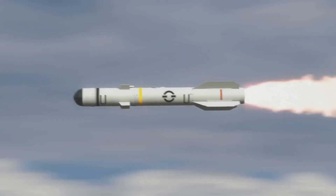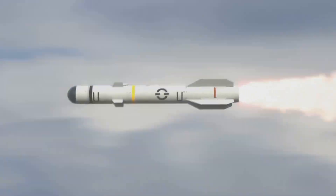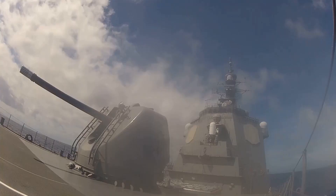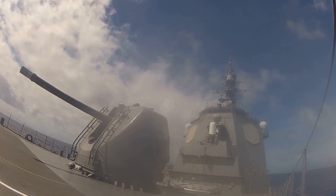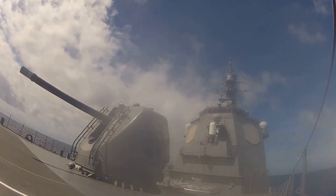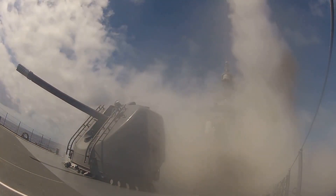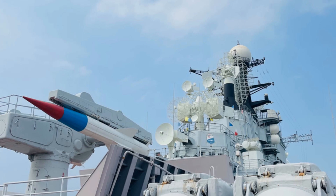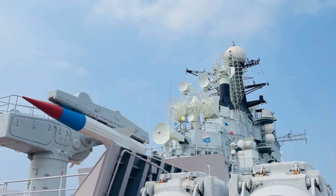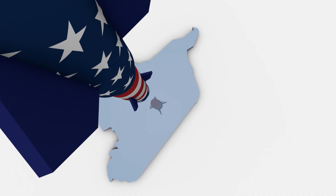Air-to-surface missiles (ASM) are fired from aircraft to hit ground or sea targets — examples are the AGM-65 Maverick and Storm Shadow. Sea-to-surface missiles are fired from naval ships or submarines to target surface vessels or land-based targets; Harpoon and BrahMos are good examples.